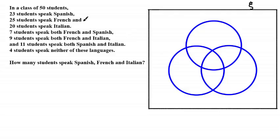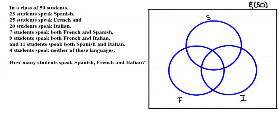As we can see, there are three main events — speaking Spanish, French, or Italian — represented by three disks. We let S be the set of students that speak Spanish, F be the set that speak French, and I be the set that speak Italian. The universal set represents all elements and contains 50 students.